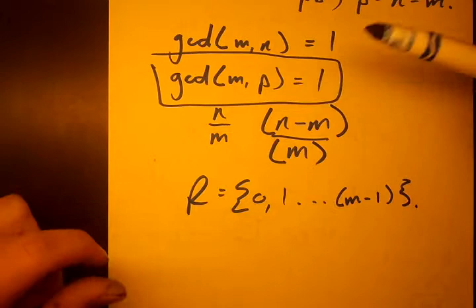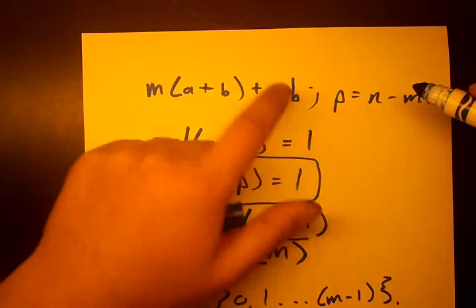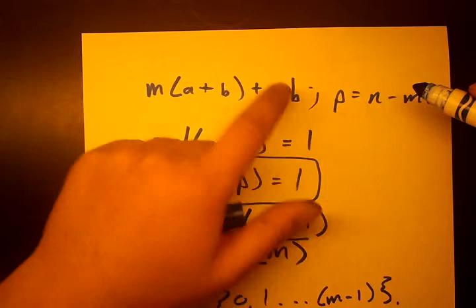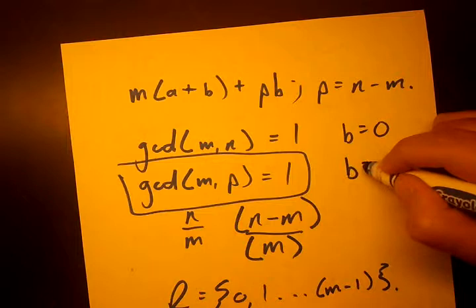So, the fact that GCD of M and P equals 1 means that when we take our formula, the smallest value for which the cycle of remainders repeats, remember, the first time the remainder is 0 is when B equals 0. When this tells us, because GCD of M and P equals 1, that means that the next time that the remainder is 0 is when B equals M.